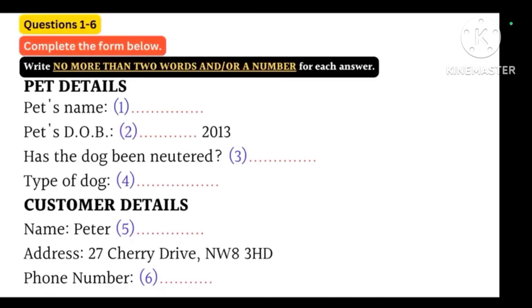Right, no worries. So, could I take your full name please? My name is Peter Pischinger. That's P-I-S-C-H-I-N-G-E-R. Right, thank you for that. And what's your address? That's 27 Cherry Drive, N-W-8, 3-H-D. And finally, a telephone number please. 020 3634 7957. Thank you.